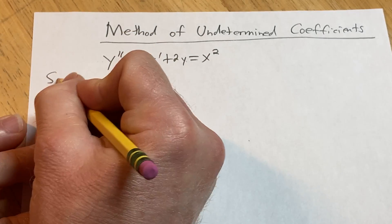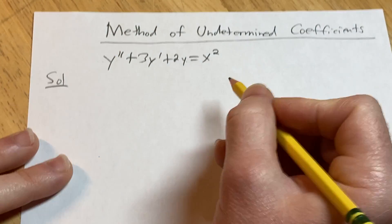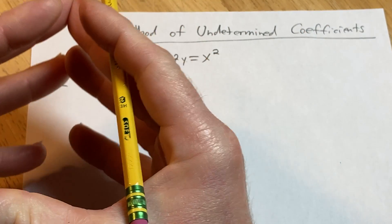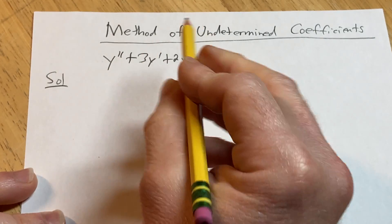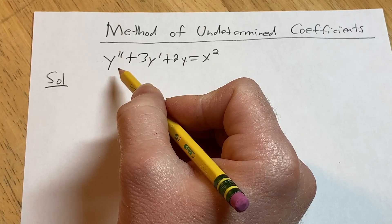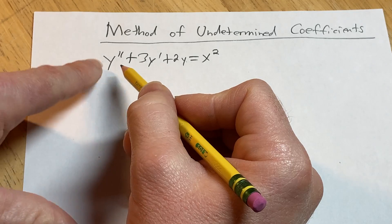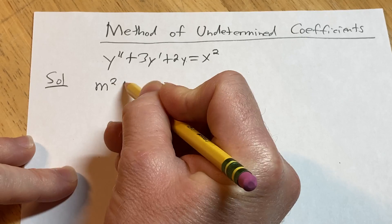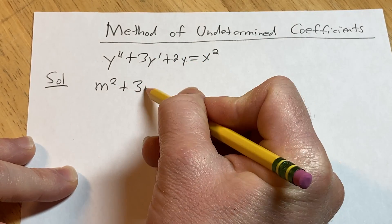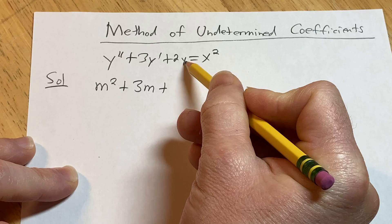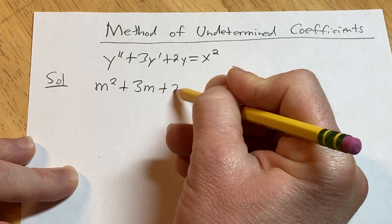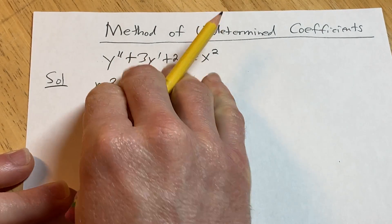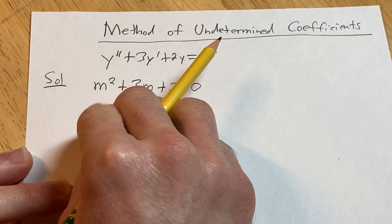Let's go ahead and solve this. The first step using the method of undetermined coefficients is to solve the associated homogeneous equation — pretend it's equal to zero and find the auxiliary or characteristic equation. You look at the order of each derivative: the second derivative gives m squared, the first derivative gives 3m, and y gives 2. So you solve this quadratic: m squared plus 3m plus 2 equals 0.